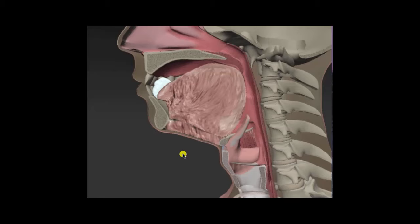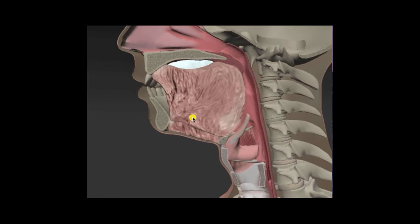Starting anteriorly with the lips, this is the oral tongue — any part of the tongue visible in the oral cavity is considered oral tongue. The hard palate is here, and the soft palate is here. When a bolus is introduced into the oral cavity, the tongue elevates to the soft palate and the soft palate moves down and forward. These are the teeth and this is the mandible. This entire region is the body of the tongue, and the part of the tongue in the oropharynx is considered the tongue base.